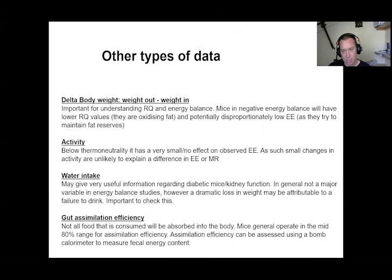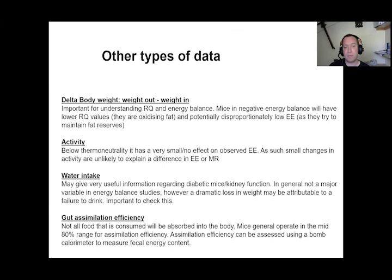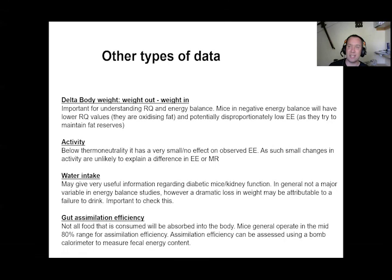Activity will be highly correlated with energy expenditure because mice are more active when their energy expenditure is higher. Water intake is a good variable to collect as it provides information on diabetic mice or kidney function phenotypes — for example, AKT2 knockout mice drinking more water, a known phenotype because AKT2 has roles in kidney water reabsorption. A dramatic weight loss in a mouse may actually reflect failure to drink rather than fat loss, which would confound your delta body weight calculations.